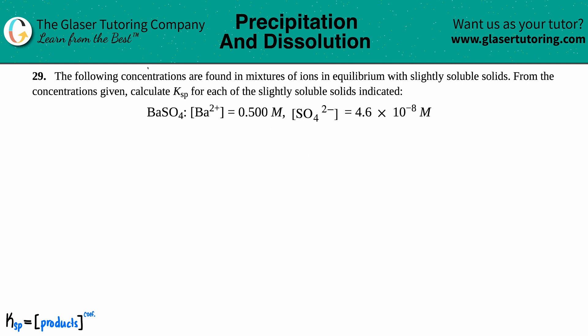Number 29: The following concentrations are found in mixtures of ions in equilibrium with slightly soluble solids. From the concentrations given, calculate the Ksp for each of the slightly soluble solids indicated. We have barium sulfate, BaSO4.